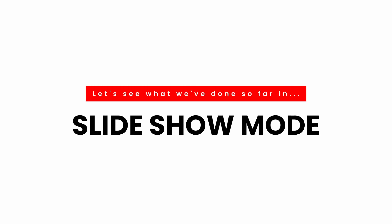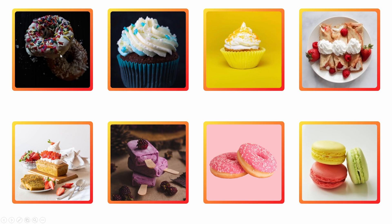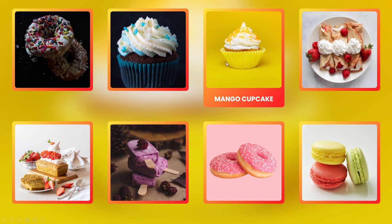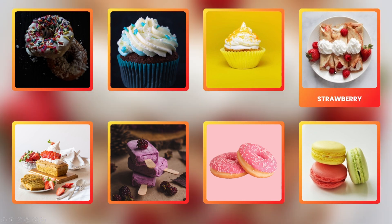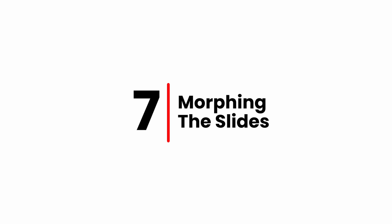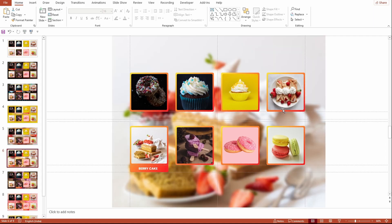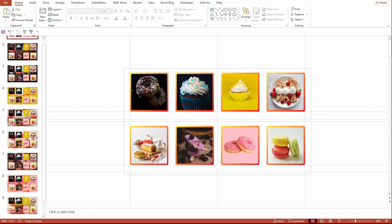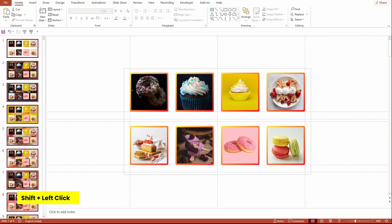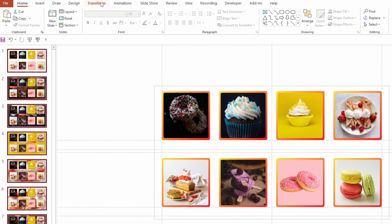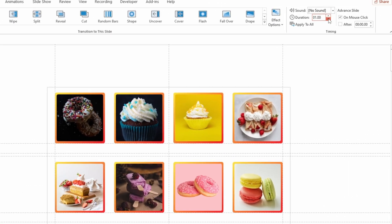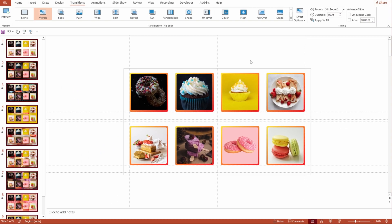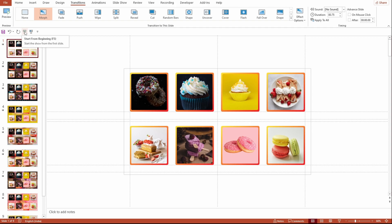Let's see what we have done so far in the slideshow mode. The mouse over actions play a perfect role here. Let's tweak this effect with the Morph transition. Select all 9 slides, go to the Transition tab, and select Morph. Reduce its duration to 0.75 seconds and unselect 'On Mouse Click'.